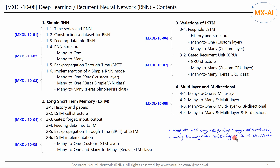For example, we can implement a two-layered unidirectional many-to-one model, or a two-layered bidirectional many-to-many model. In this video, we'll use these combinations to implement several types of recurrent neural network models.